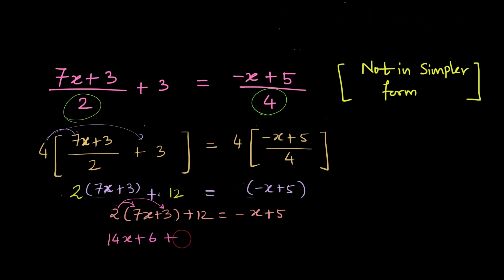So we have 14x plus 6 plus 12 is equal to minus x plus 5 which is nothing but 14x plus 18 is equal to minus x plus 5.